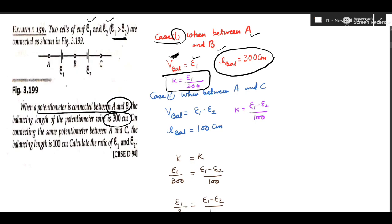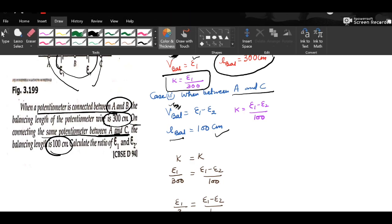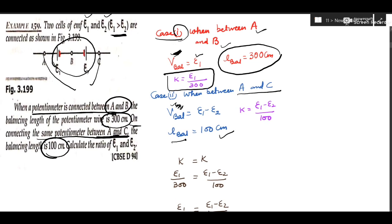On connecting the same potentiometer between A and C, the balancing length is 100 centimeter. In case 2, between A and C, both cells are present and they are opposing each other because the same terminals — negative to negative — are connected. In opposing configuration, the net voltage is E1 minus E2. So V_balanced = E1 − E2 and L_balanced = 100 cm.